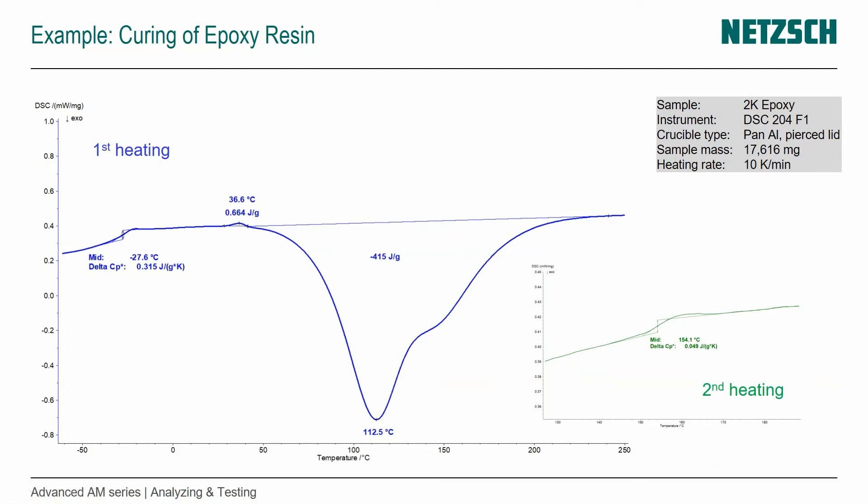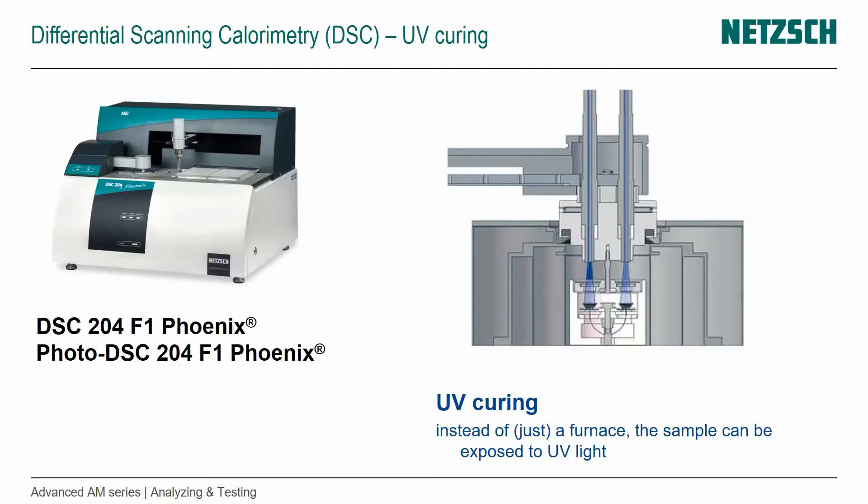And that's really what we're looking for. We want to understand how the curing happens as a function of temperature and time, and how, for example, the glass transition temperature changes before and after cure. And since we're talking about UV curable materials, we use a DSC that is also able to give us the UV curing information.